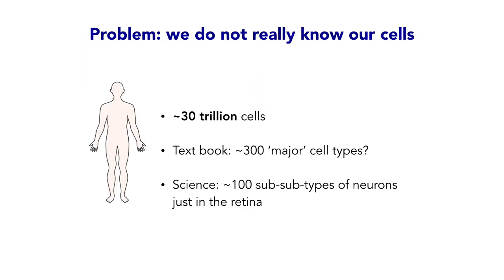The human body is made of many different types of cells — about 37.2 trillion of them.